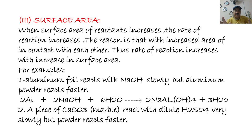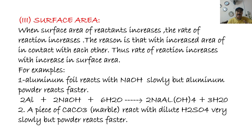Factor number three: surface area. Surface area also affects the rate of chemical reactions. Reactants with greater surface area show faster reactions than those with less surface area. With increased area in contact, the rate of reaction increases. For example, aluminum foil reacts with NaOH slowly, but aluminum powder reacts faster: 2Al + 2NaOH + 6H2O → 2NaAl(OH)4 + 3H2. Similarly, a piece of marble (CaCO3) reacts with dilute HCl very slowly, but powdered calcium carbonate reacts very fast because powder has greater surface area.